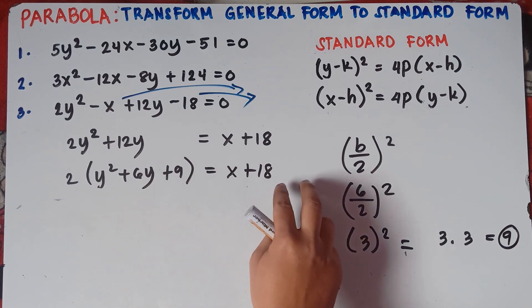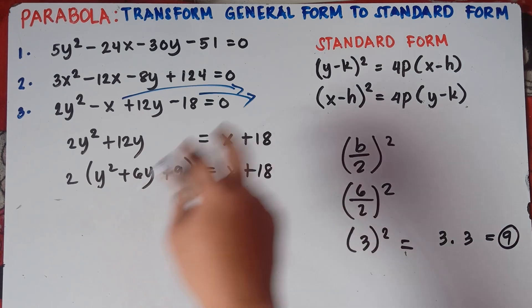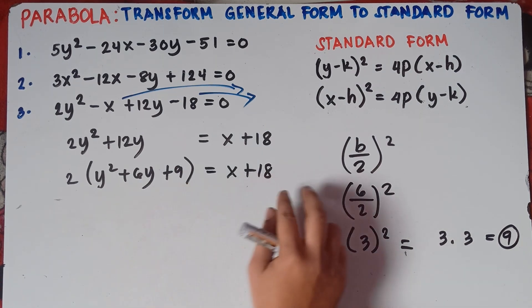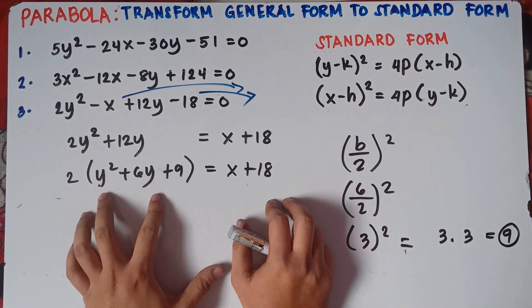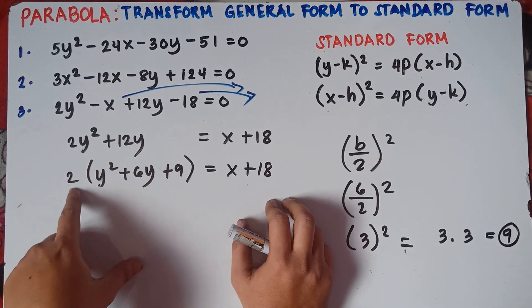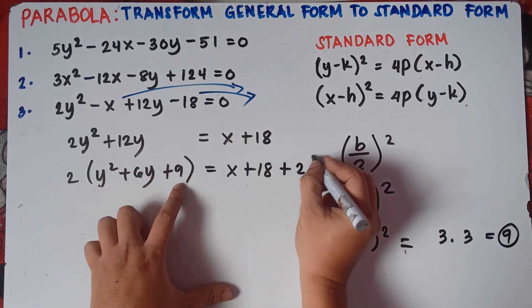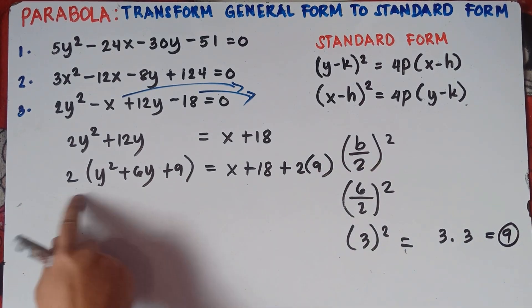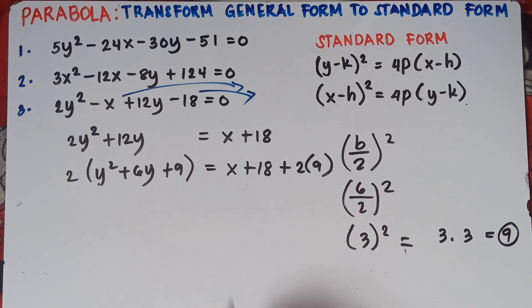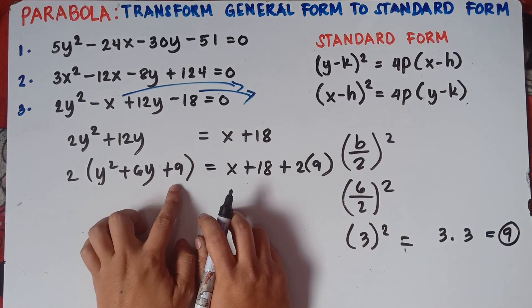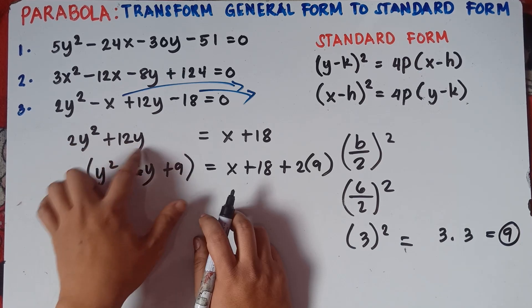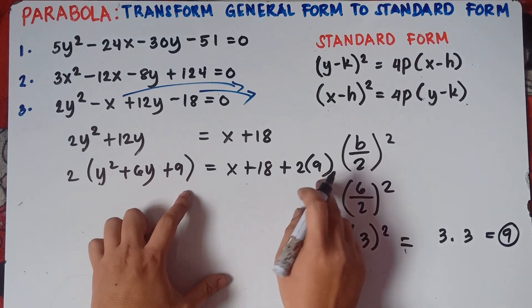Be careful here — you will not add 9 directly on the right side. In the first video, if we add 9 on the left we also add 9 on the right, but this time it's tricky. Our original equation was 2y squared plus 12y, and we factored it out by 2. So the number we add on the right side is the product of 2 and 9, which is 18. We need to add 18 on the right side.